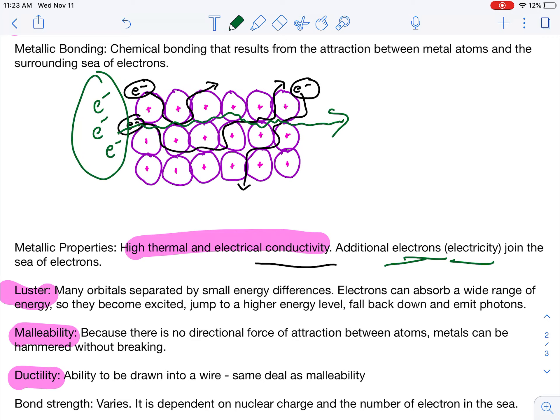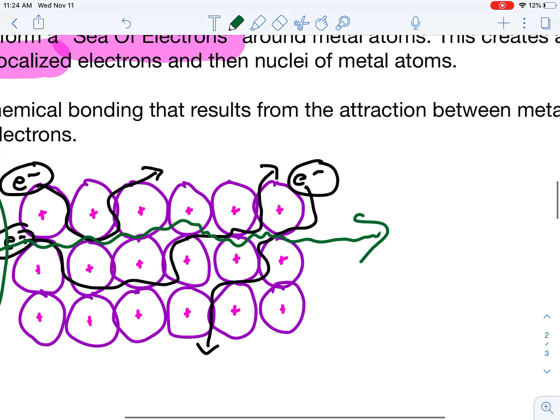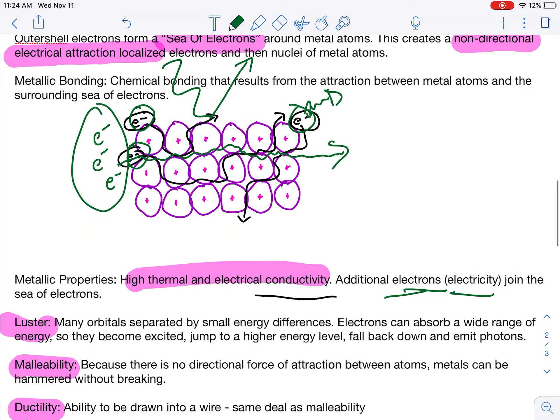Luster. Many orbitals are separated by small energy differences. Electrons can absorb a wide range of energy, so they become excited, jump to a higher level, and fall back down, emitting photons. So, when light actually hits this, it doesn't just bounce. Believe it or not, it's exciting all these valence electrons that are in the sea of electrons. They jump up and fall back down and actually emit the light a second time. So, you're not reflecting light. The electrons are actually creating light, which is very neat.